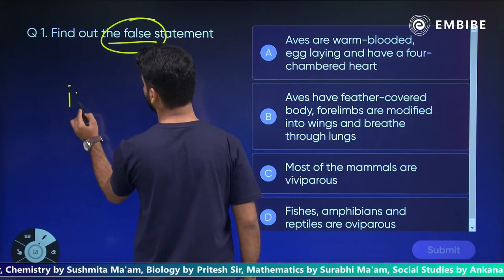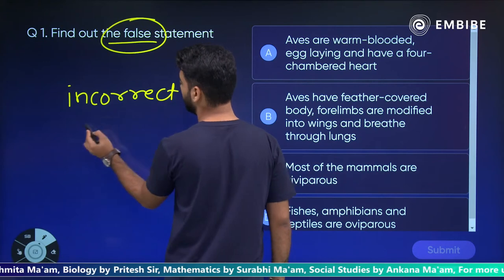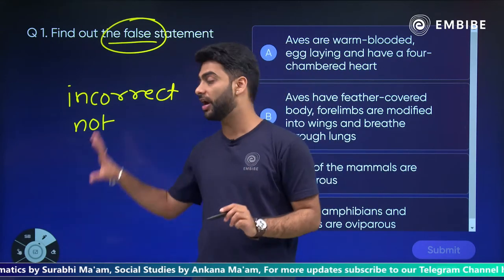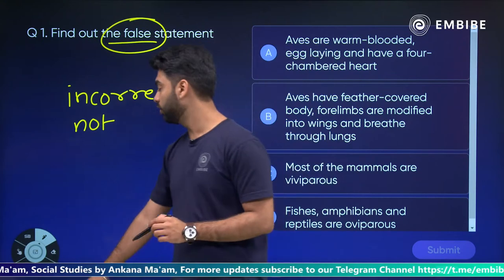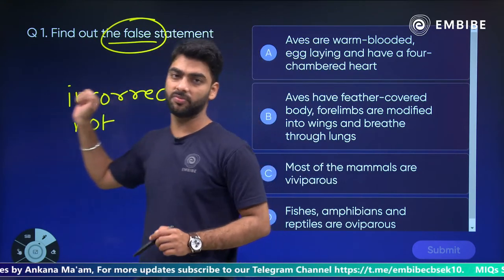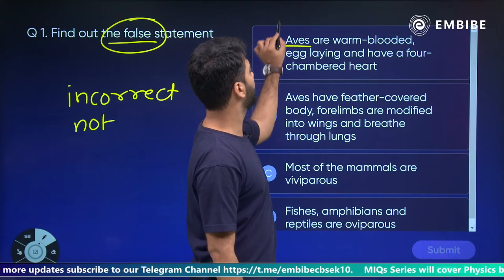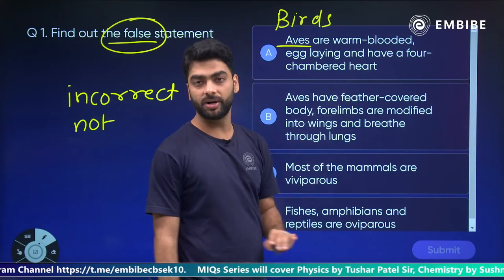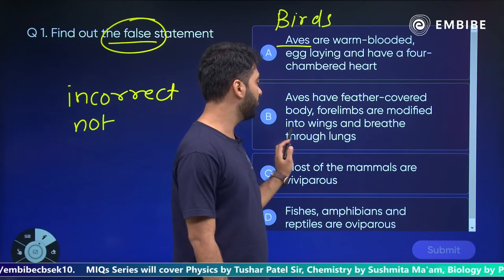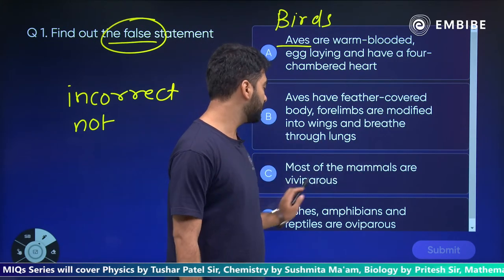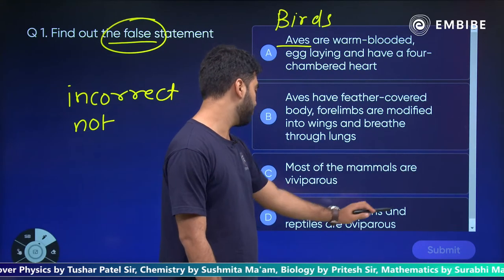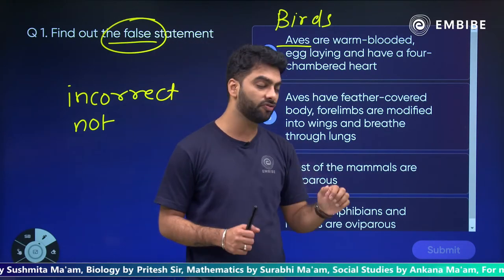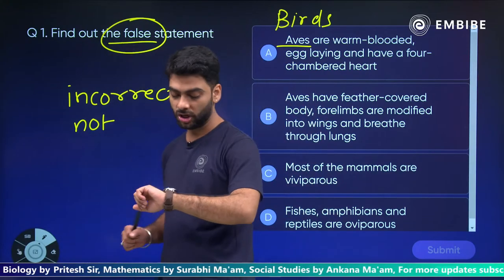Jo bhi words hain jaise ki false, incorrect statement, then not — these all words we must read very, very carefully. We have to read the question stem absolutely carefully. Which of the following is false? I will give you 20 seconds. Read them and answer the question. Your time starts now.